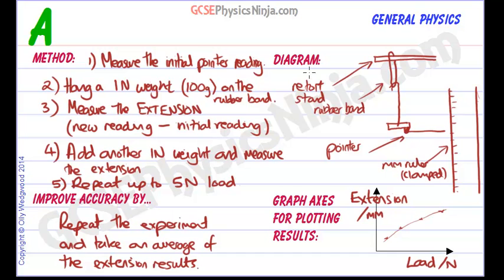So there we are, a method, a diagram labeled. We would improve accuracy by repeating it and taking an average of the results, and plot the dependent variable on the vertical axis and the independent variable, the one that you're changing, on the x-axis.